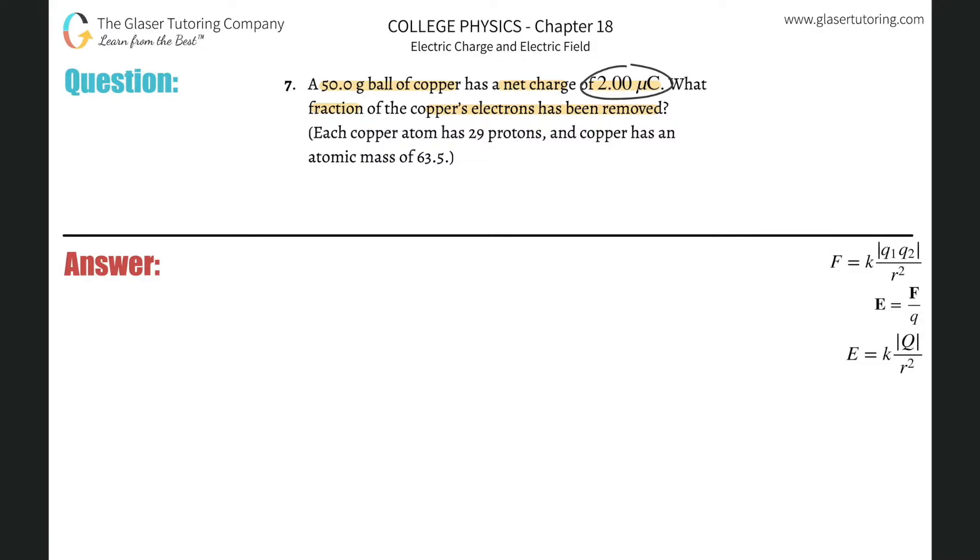We start with the net charge, right? If this thing has a net charge of two microcoulombs, that basically tells us the number of not only excess protons, but then the number of electrons that were removed. So we can basically look at this, so it's two microcoulombs times then microcoulomb on the bottom. There's 10 to the 6 microcoulombs in one coulomb. And then we know that there are 1.6 times 10 to the minus 19 coulombs of charge for every proton.